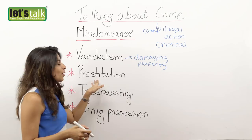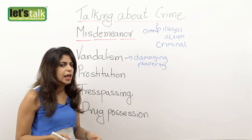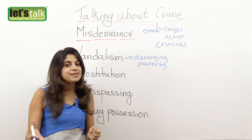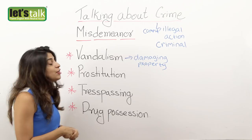The next one is prostitution. Prostitution is having sex for money. In many countries it's legal, but in countries where it is not legal it is considered a crime — when women have sex for money. That's prostitution.